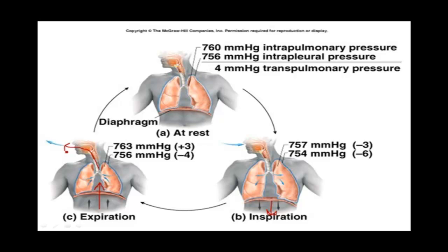This is called pulmonary ventilation — the movement of air in and out of our lungs for breathing. Respiration is the actual movement of gases across the membranes from our alveoli to our red blood cells and vice versa, so that we can utilize the oxygen and get rid of the waste products. That's respiration.